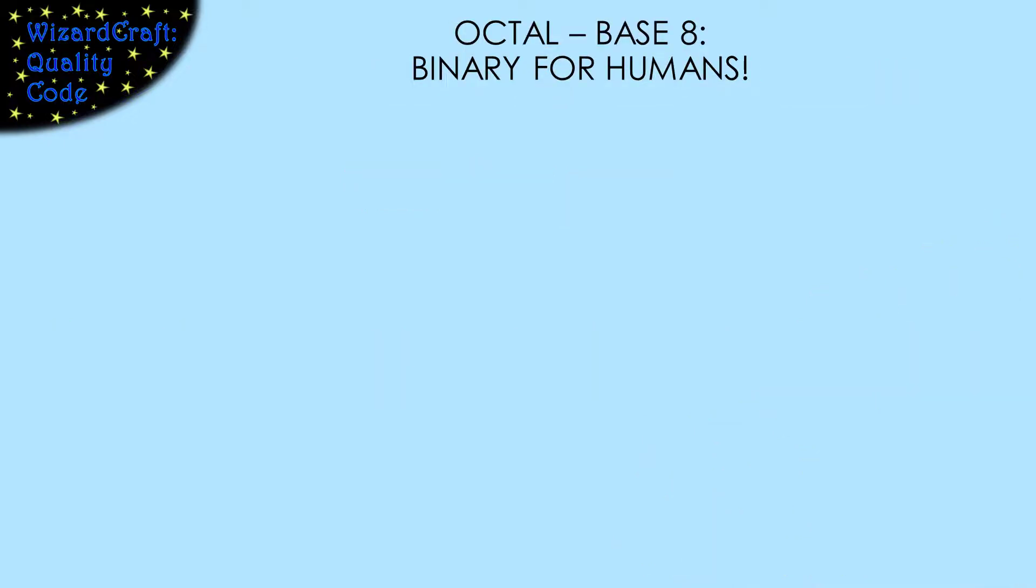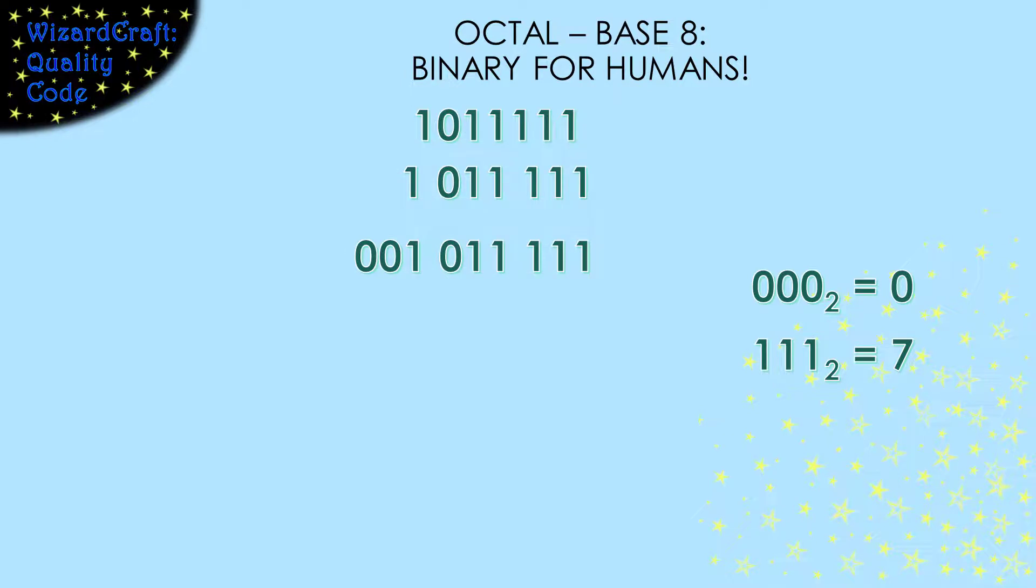When humans work with binary, we do the same sort of higher-level grouping. One system that uses this is octal, where the positions are the powers of 8. If you group 3 binary digits, the values they can represent are 0 through 7. So we can take a binary number and split it into groups of 3, convert each group to its value, and then those combine to represent the same overall quantity in octal.